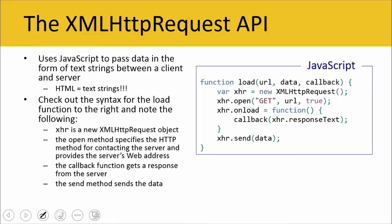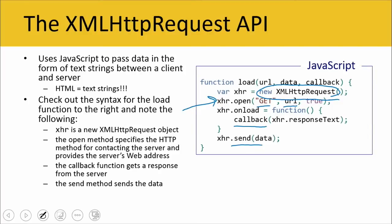We've got some basic syntax here for the load function to the right. We go ahead and we create a new XML HTTP Request object stored in XHR, which is short for XML HTTP Request. Then the open method is going to specify the HTTP method for contacting the server — we use GET — and it's also going to provide the web address for that server. Then when we call the callback function, we're going to get a response from the server, and finally we use the send method in order to send data to the server.